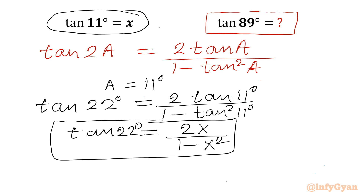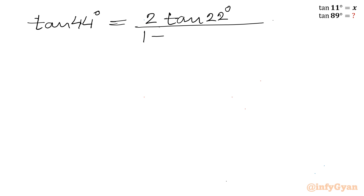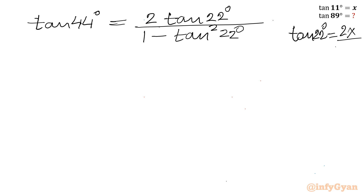Now I will calculate tan 44 as well. So tan 44 degrees will be equal to 2 tan 22 degrees over 1 minus tan squared 22 degrees. Now tan 22 was in terms of x — it was 2x over 1 minus x squared.